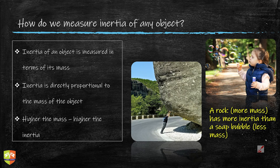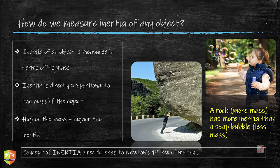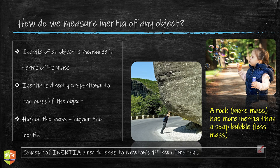So the rock with more mass has more inertia than a soap bubble. This concept of inertia is directly related to Newton's first law of motion, which we'll see in the next video. Once inertia is clear, you'll appreciate Newton's first law and build on your concepts of dynamics. I hope you understood the concept of inertia — there are lots of day-to-day events where inertia is involved, so observe where you find objects displaying inertia. See you in the next session on Newton's first law — the journey is going to be exciting, bye!